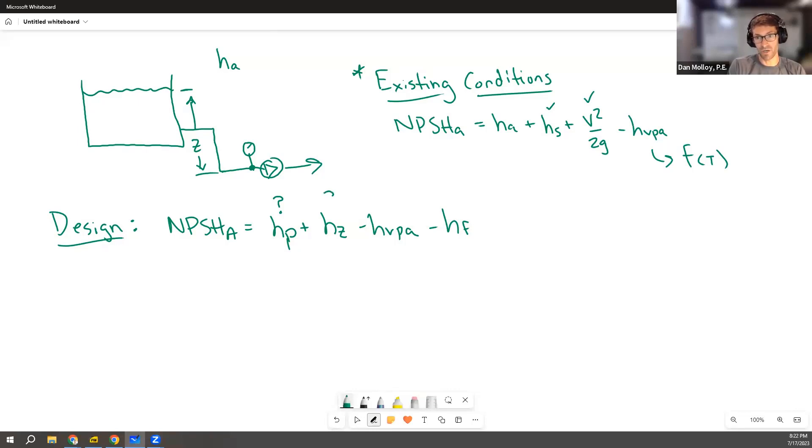So again, this number, they could give it to you in the problem statement, but they could also make it the unknown. And they could say there's a pump, the manufacturer says the net positive suction head available must be at least some number. Figure out the height that the reservoir has to be at in order to make sure that the pump does not cavitate. That would be a problem they could ask.